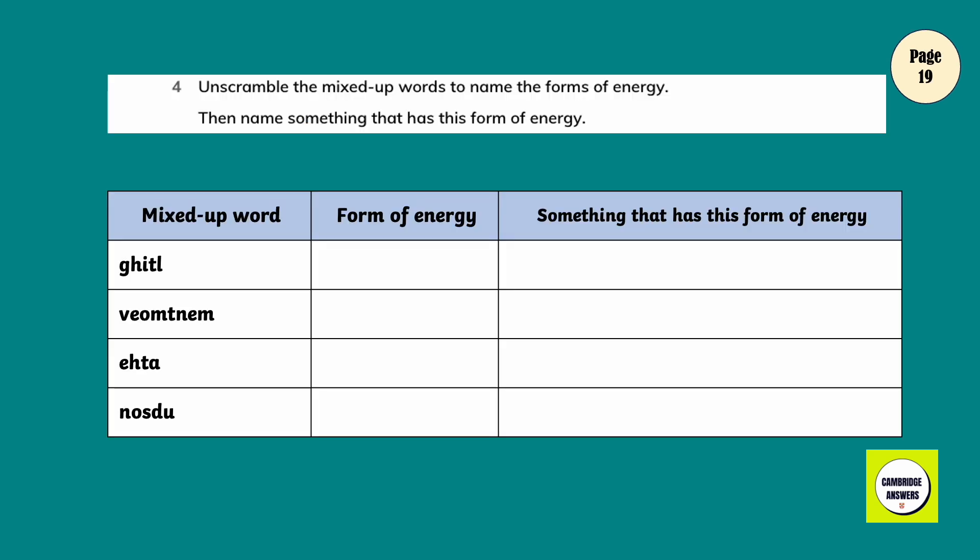Unscramble the mixed up words to name the forms of energy. Then name something that has this form of energy.